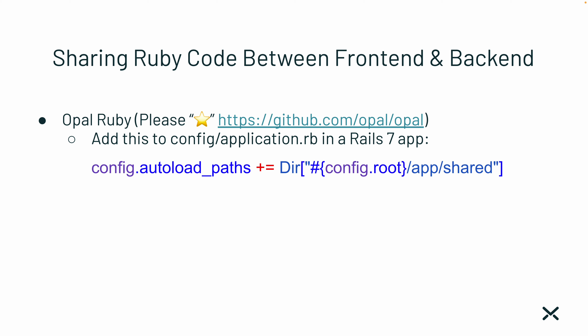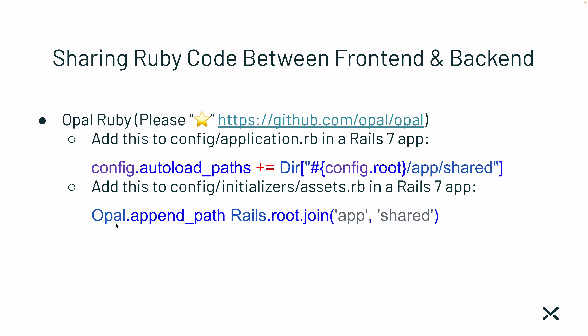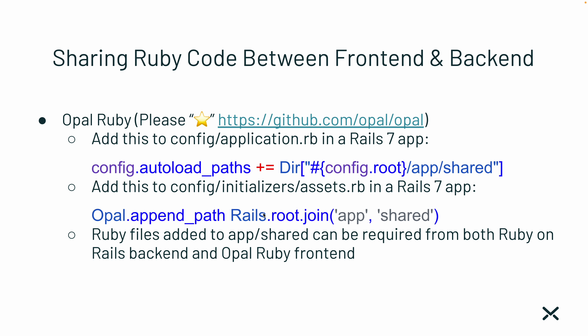Anything in app/models or app/controllers is going to be back end only. Anything under the JavaScript directory is front end only. But if you need code shared between both, you put it in app/shared. That also addresses the security concern — you don't want to expose all of your back end Ruby code to the front end. This way you control what you expose, and only files here are whitelisted to be available to the front end. Next, for Opal, under config/initializers/assets.rb in a Rails 7 app, add opal.append_path for the same app/shared directory. Now both Rails and Opal have access to app/shared as an available Ruby path. Ruby files added to app/shared can be required from both the Rails back end and the Opal Ruby front end.